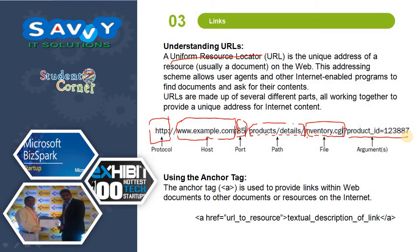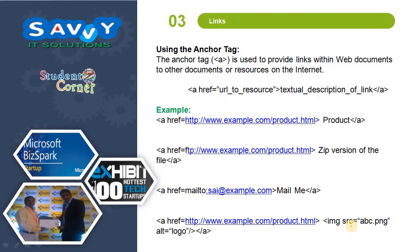Whenever we are making links in a webpage, we need to use the anchor tag — the A tag. It is used to provide links within web documents to other documents or resources on the internet. We use A href, specify the link, and type the text or image we need to call.